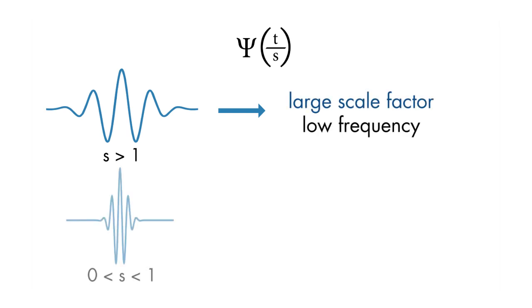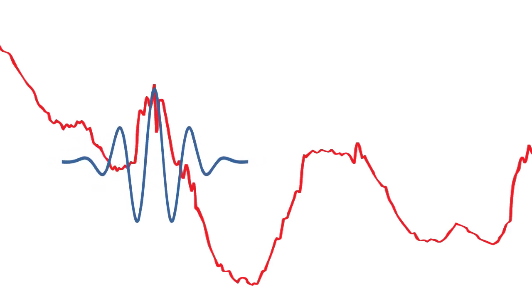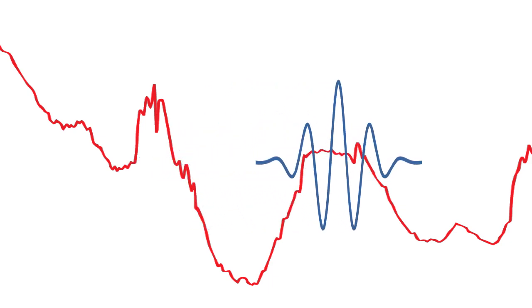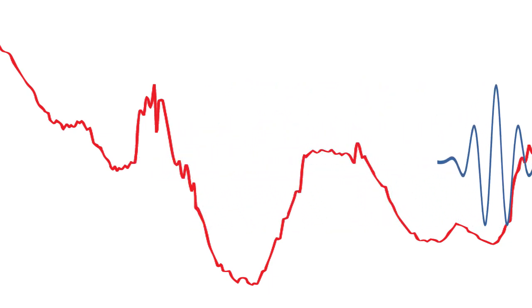A smaller scale factor results in a shrunken wavelet, which corresponds to a high frequency. A stretched wavelet helps in capturing the slowly varying changes in a signal, while a compressed wavelet helps in capturing the abrupt changes. You can construct different scales that inversely correspond to the equivalent frequencies as mentioned earlier.